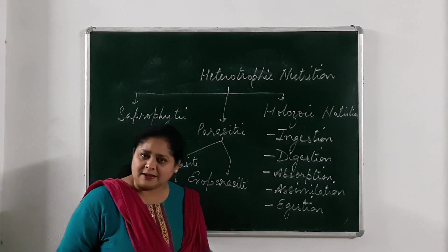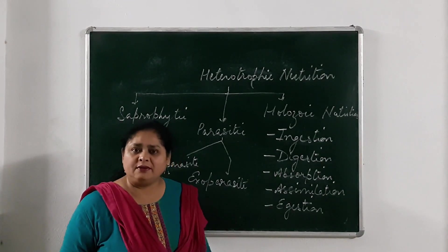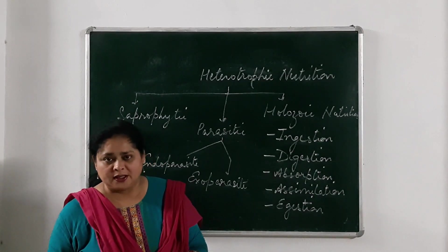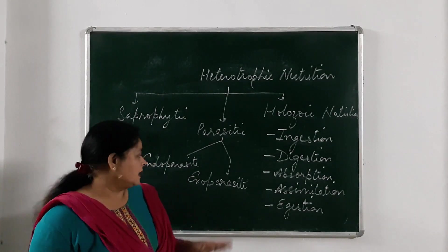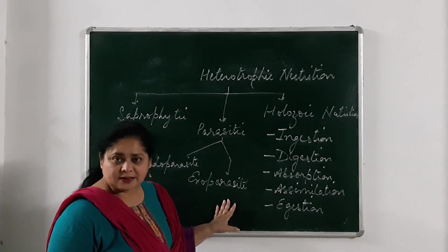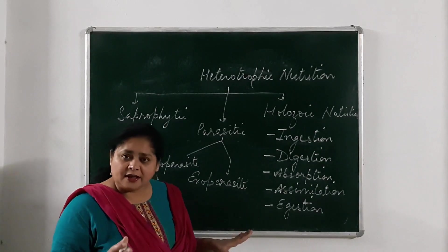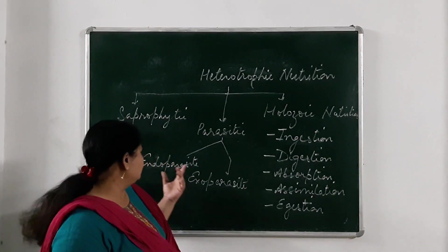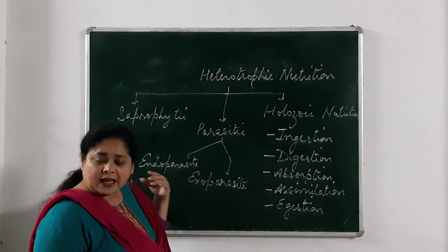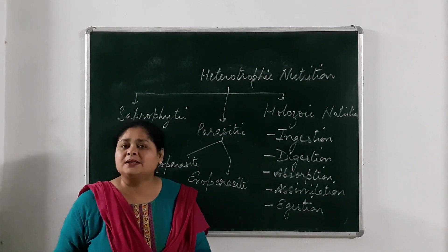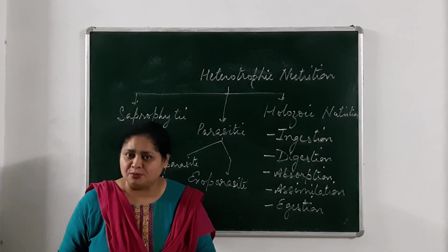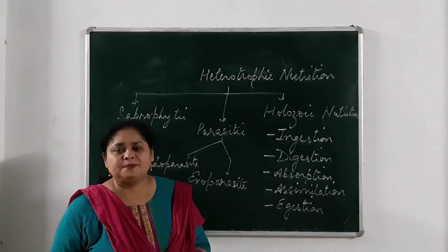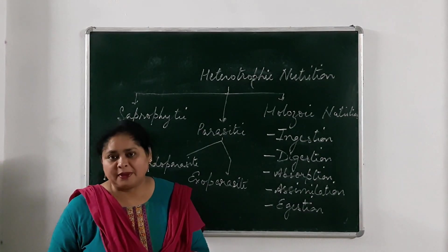Some parasites live inside the body of other living organisms, and some live on the body. If they live on the body, they are known as exoparasites. If they live inside the body, they are known as endoparasites. These parasites may be plants or animals both. An example of a plant parasite is Cuscuta, also called Amarbel.